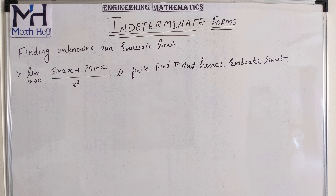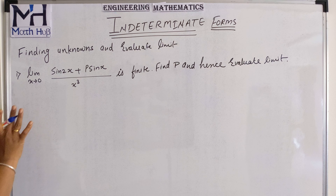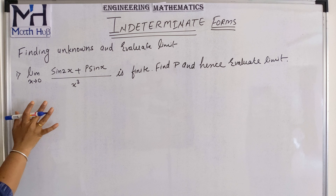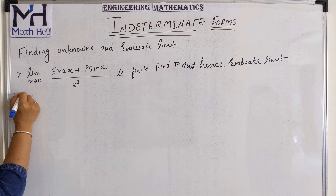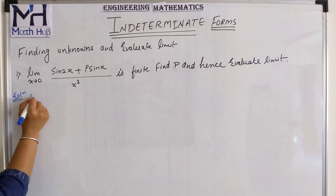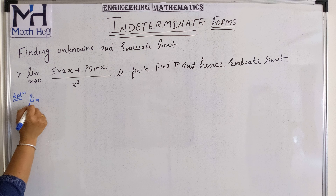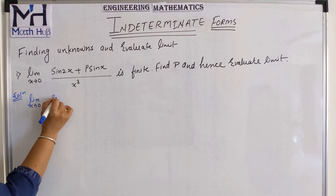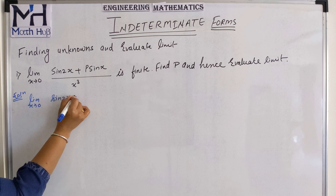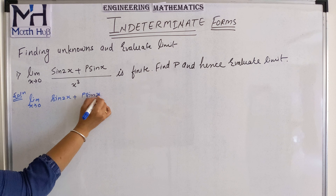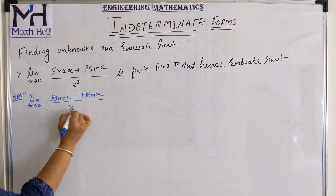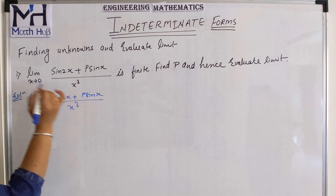Here they have said that the value of this function must be finite. The working rule is: we have to solve it the same way we have been solving questions. First we find the true value — that is, we substitute the limit as it is into the function and check whether we get an indeterminate form or a value.